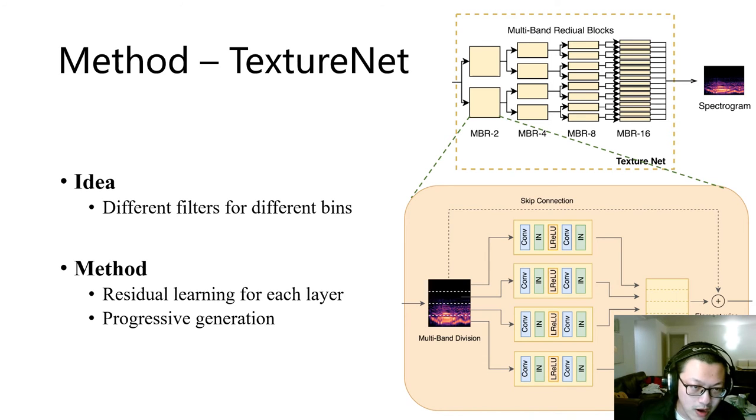This draft spectrogram is then sent to the TextureNet for additional details. The authors believe that a bottleneck of ContourNet is that the same convolution filters are used for different inter-frequency bands. So in TextureNet, the model divides the feature map into multiple bands and adds detail from sketch to spectrogram, layer by layer. And finally, outputting to the final spectrogram, we can see from 2 to 4 to 8 to 16, and then output a spectrogram.